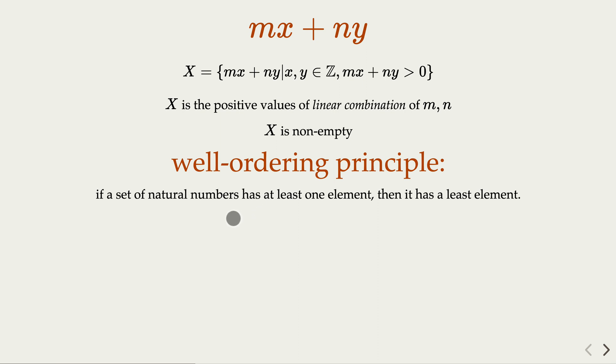if the set of natural numbers has at least one element, is non-empty, then it must have a least element. So in this case, the set X is well-defined and we're going to have a least element. Let's call it d.